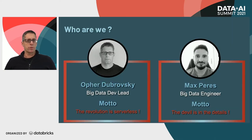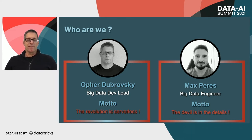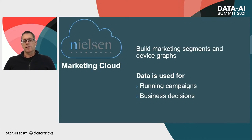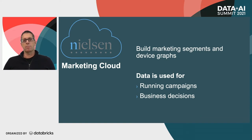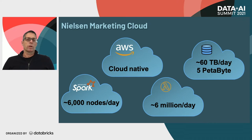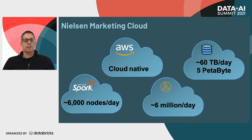I want to introduce ourselves. My name is Ofer Dubrovsky. I'm a big data dev lead at Nielsen, and I think serverless is the revolution. With me is Max Peres, a big data engineer, and in his view, the devil is in the details. We are part of Nielsen Marketing Cloud, which is a data management platform — DMP for short. We build marketing segments and device graphs, and our data is used for running campaigns and making business decisions. We're cloud native, running predominantly on AWS. We use a lot of Spark — many Spark jobs every day — plus lots of Lambda functions and other serverless technologies. In total, we store about five petabytes of data and process roughly 60 terabytes of new data every day.